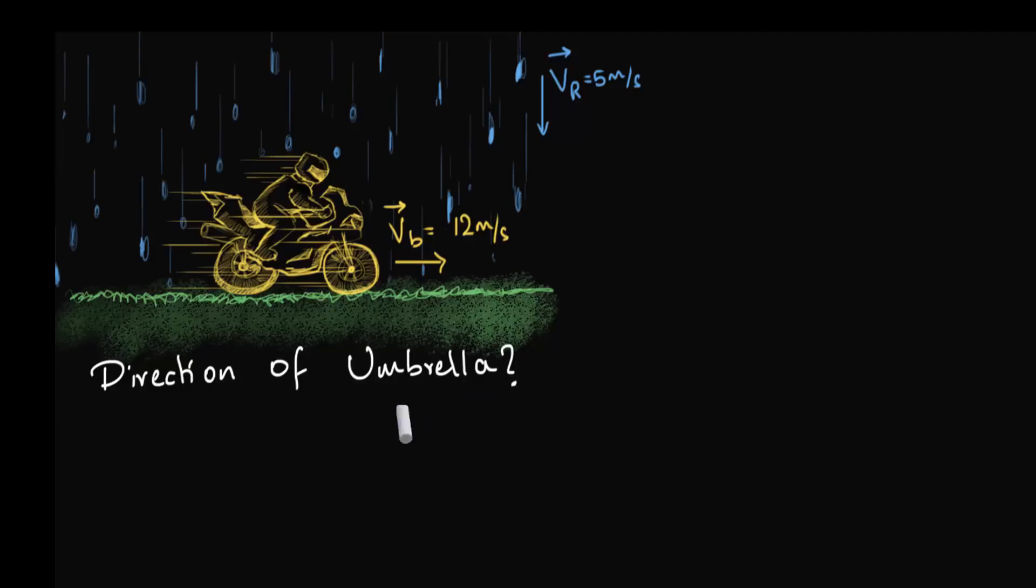At first, this sounds like a random and absurd question. I mean, it's reasonable to ask, why can't we just hold our umbrella this way, just like normal, right? Well, if you hold your umbrella this way when you're traveling on a bike, you'll end up getting wet.